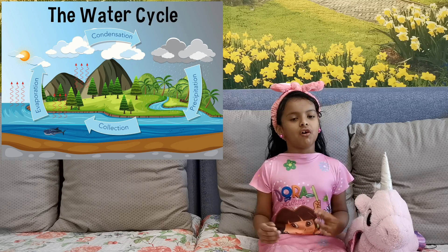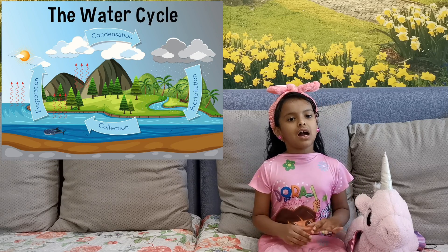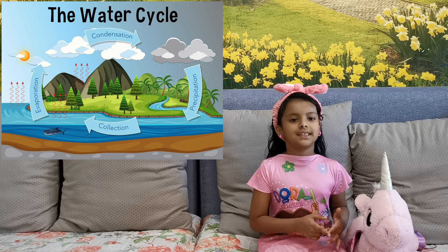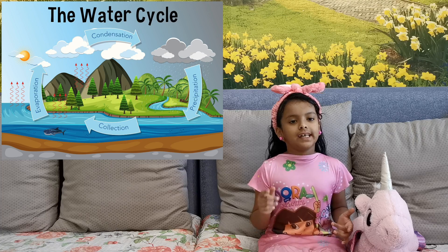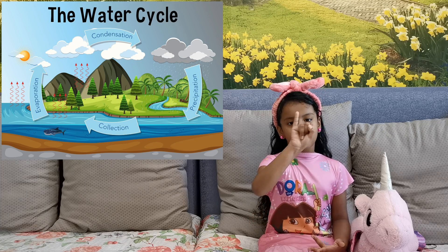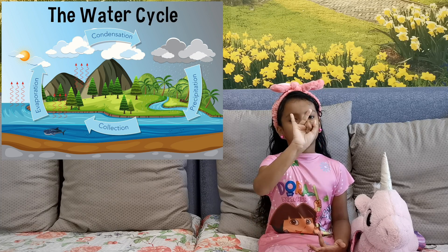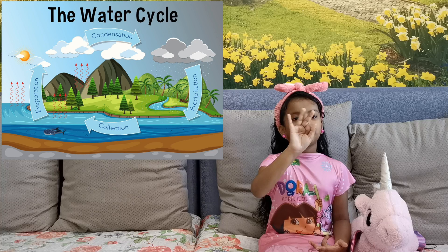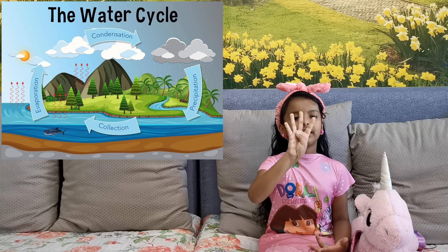First of all, there are four processes in the water cycle: evaporation, condensation, precipitation, and collection.